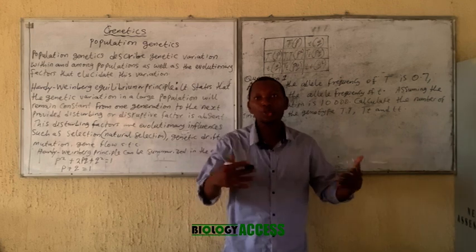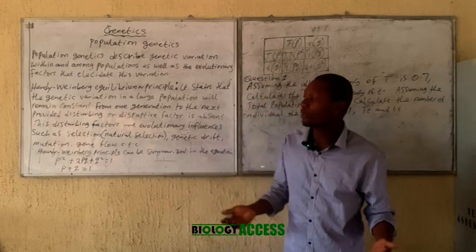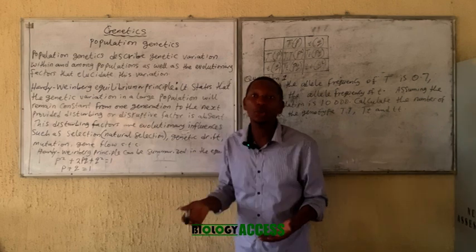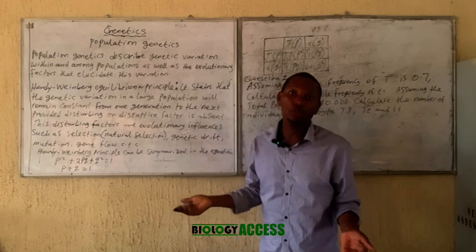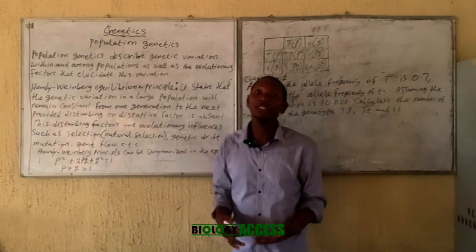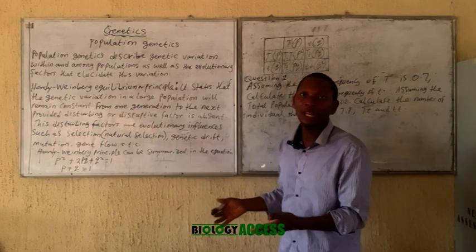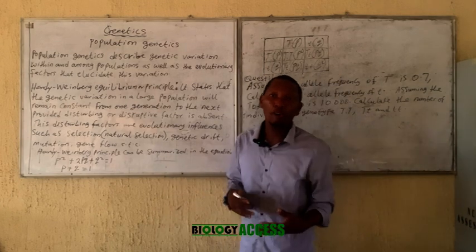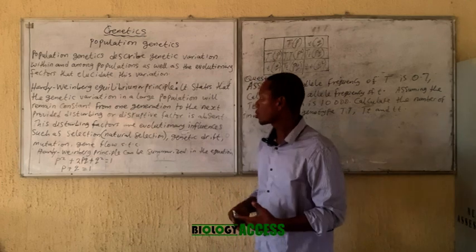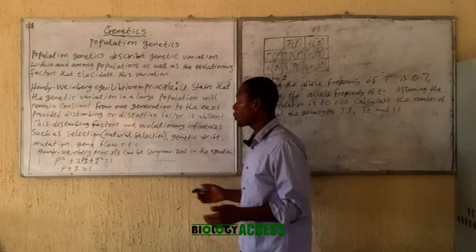This equilibrium holds in the absence of disruptive forces. These disruptive forces include natural selection, gene flow, genetic drift, and others. In a future video I will explain these terms as well as other aspects of population genetics.